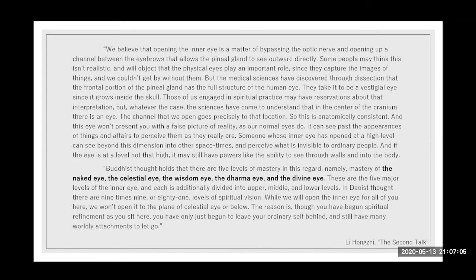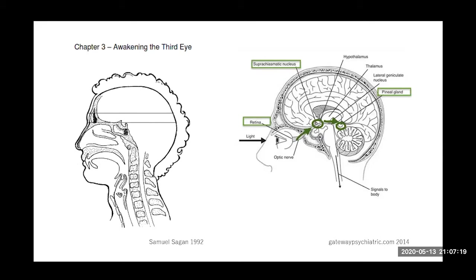Li Hongzhi says they will open the inner eye but not to the plane of the celestial eye or below, because practitioners have only just begun to leave their ordinary self behind and still have many worldly attachments to let go. There's a very important ethical aspect to this — you have to cultivate a certain level of virtue that makes you resonate at a frequency such that when you open your third eye, you'll be able to see things that won't tempt you to do stupid things. You won't be given information unless you are trusted with it.